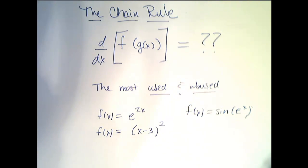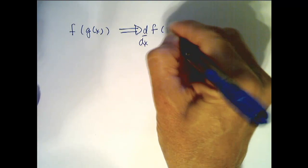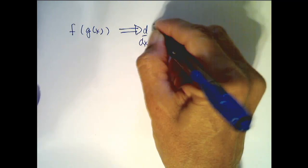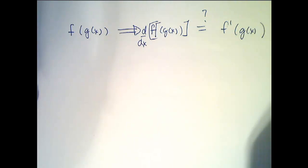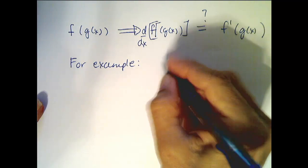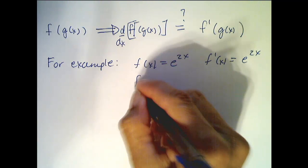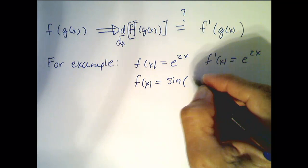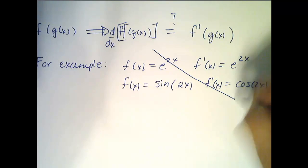Let's see if we can come up with our own rule before I just state it. If I give you f(g(x)), the composition of two functions, we are tempted to say that d/dx of f(g(x)) equals f'(g(x)) — just taking the derivative of the outside function. For example, if f(x) = e^(2x), then its derivative is e^(2x). Or if f(x) = sin(2x), then f'(x) = cos(2x). This is very tempting and very, very wrong.